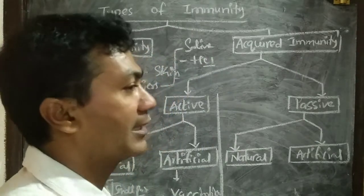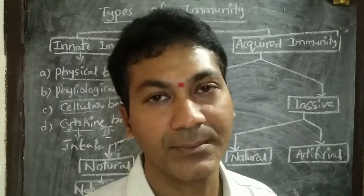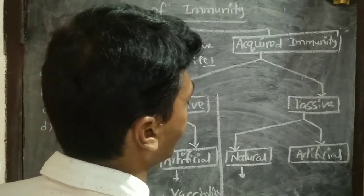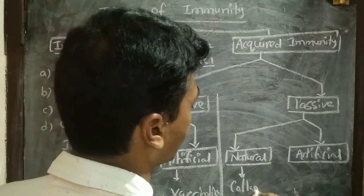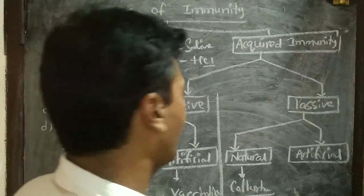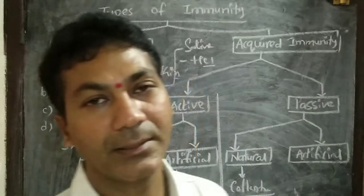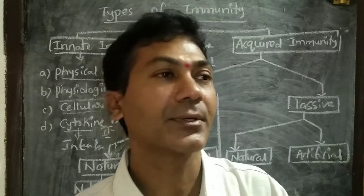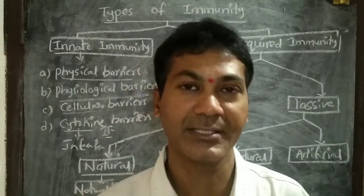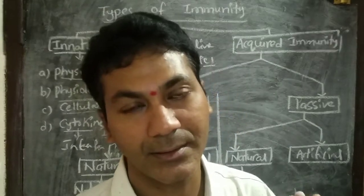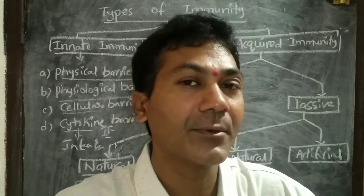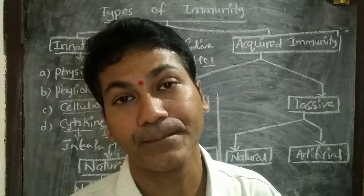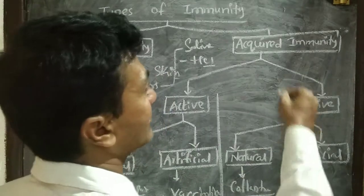Passive acquired immunity is when immunity is developed for some time only. The first type is natural passive acquired immunity, which involves pre-formed antibodies — for example, colostrum (mother's milk). Breastfeeding babies suck milk from the mother; colostrum contains natural antibodies that enter the child's body. These pre-formed antibodies get rid of a number of diseases, so the child cannot get diseases during the feeding period. This is natural passive acquired immunity.